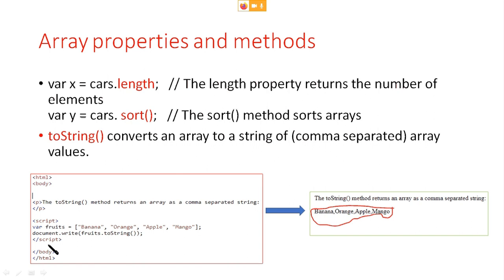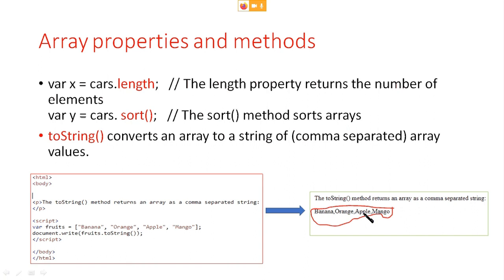In the script tag, you can see fruits is an array with values banana, orange, apple, and mango. We print it to screen by using document.write with the fruits.toString method. The advantage of toString is that it returns the array as a comma-separated string. Remember this.